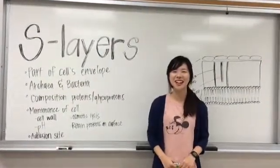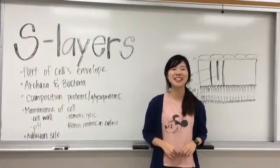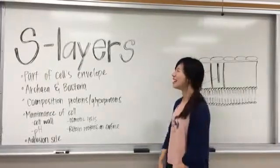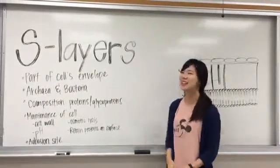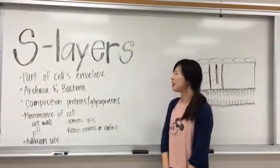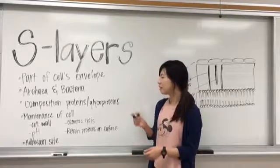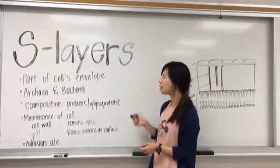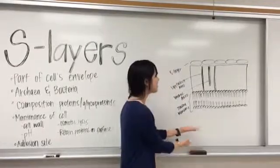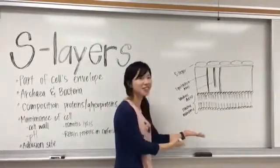My name is Yang and this is for Microbiology class for the summer. The topic for today is S-layers, and it's found in both gram-positive and gram-negative bacteria. The things we're going to talk about are the composition, the maintenance of the cell, and the parts of the cell's envelope. You can also see a drawing of how the S-layer sort of looks like.